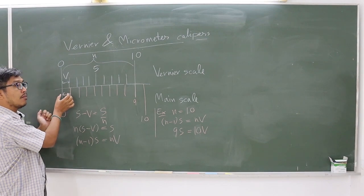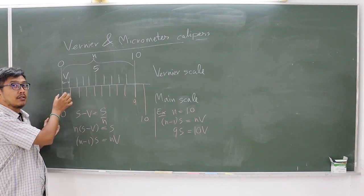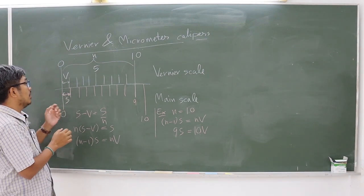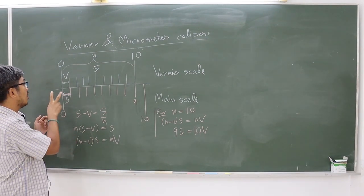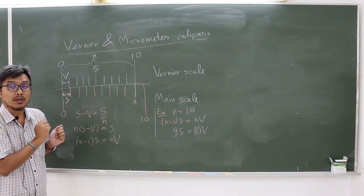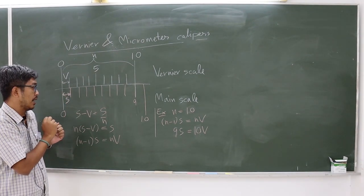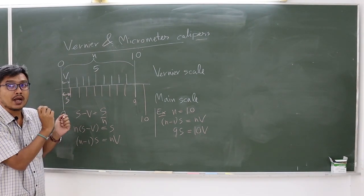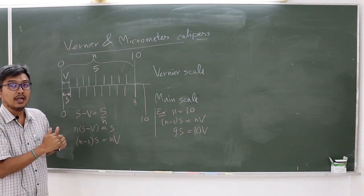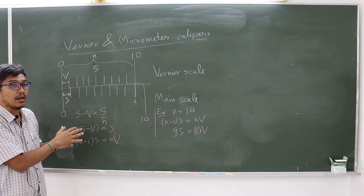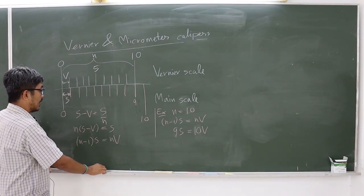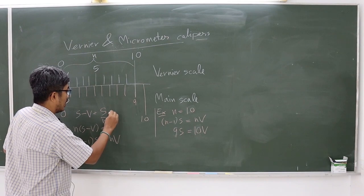The length of the main scale is defined as S, and the length of the vernier scale is defined as V. The difference of these two values is the least count, which is the highest resolution of the instrument.